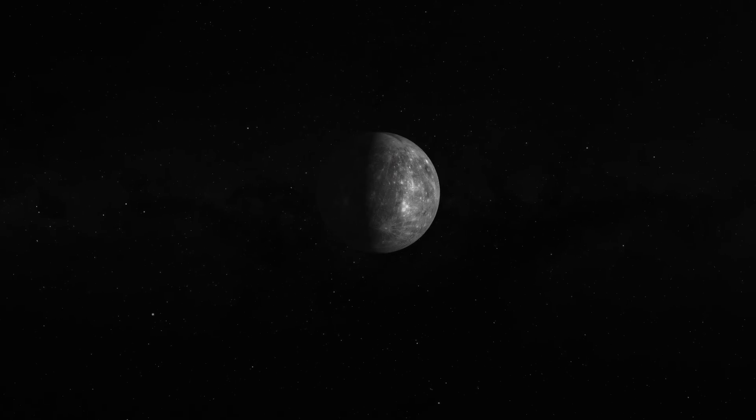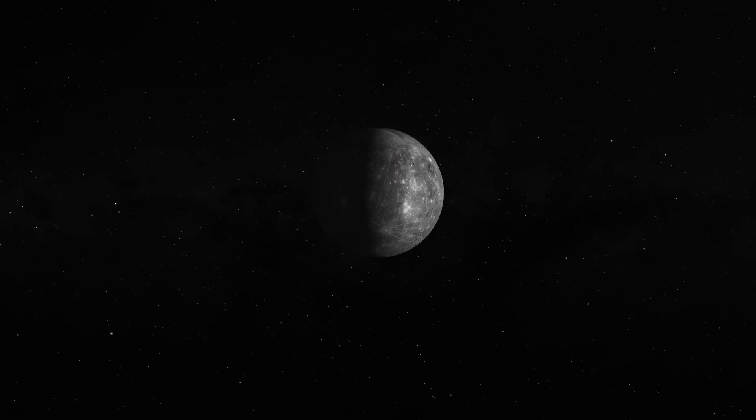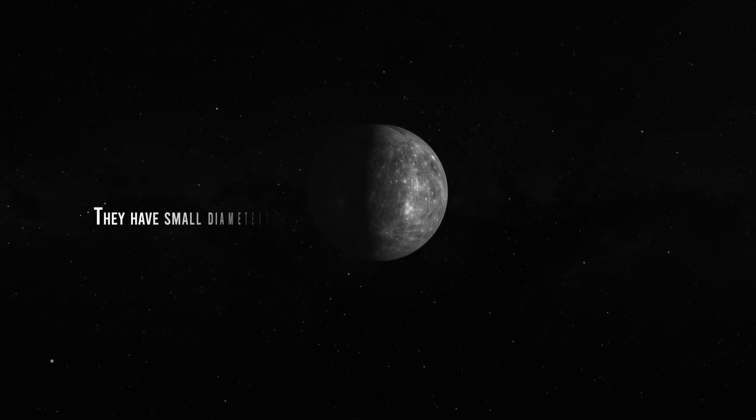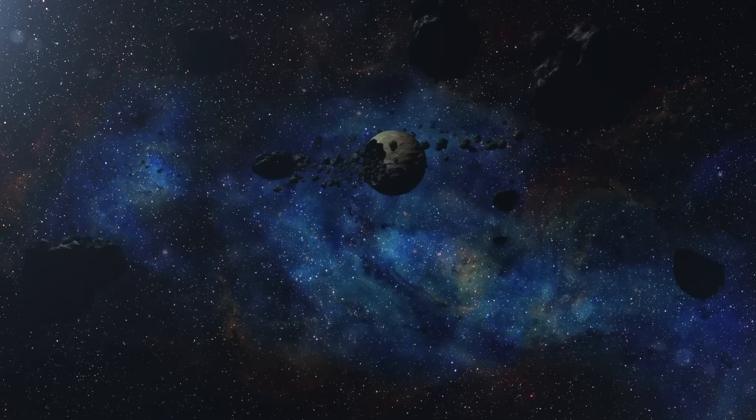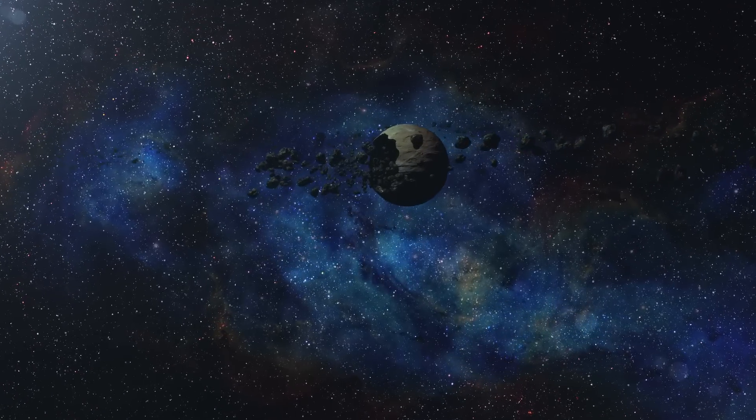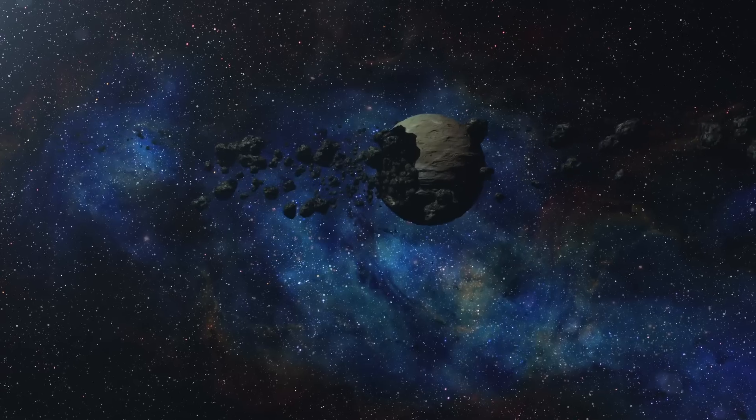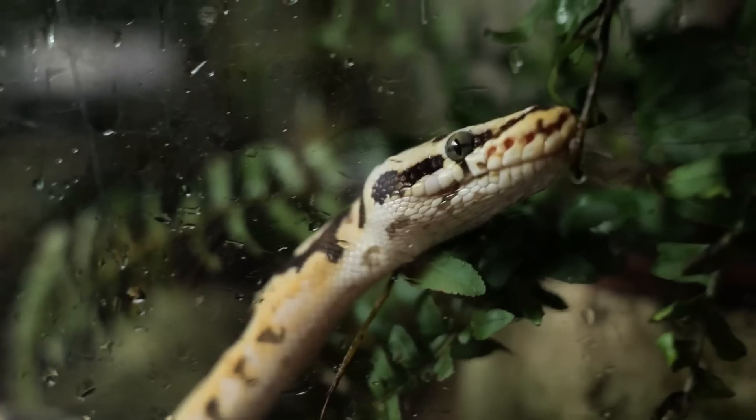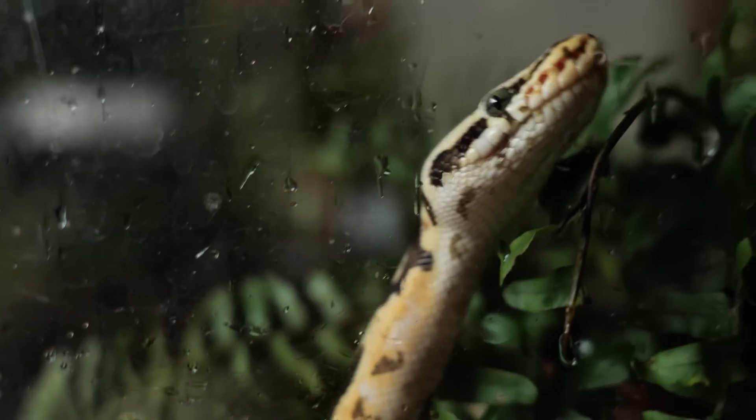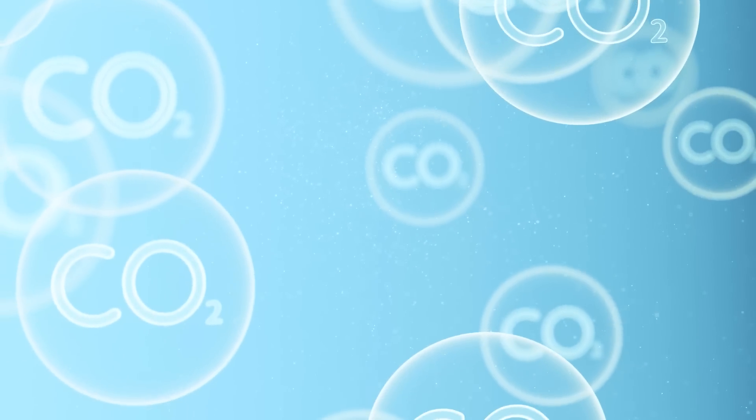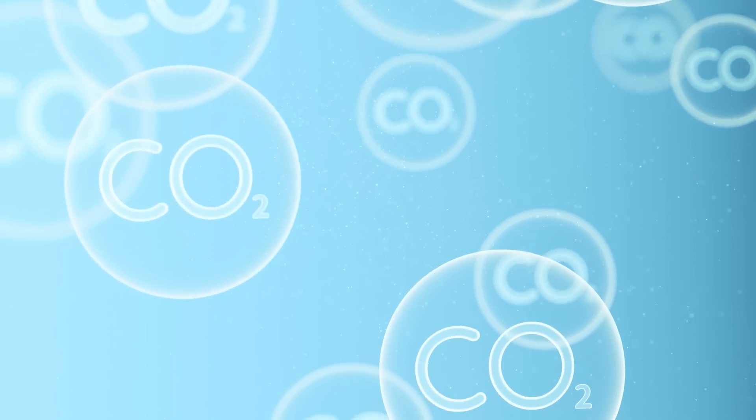The second reason why a planet with little mass is a bad candidate to host living beings is that they have small diameters and therefore tend to quickly lose the energy left over after its formation and end up geologically dead, lacking volcanoes, earthquakes, and tectonic activity, which provide the surface with materials necessary for life and atmospheric temperature moderators such as carbon dioxide.